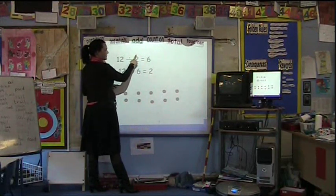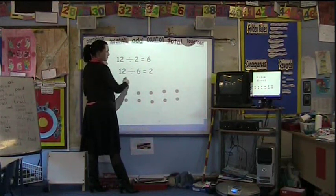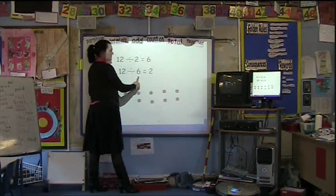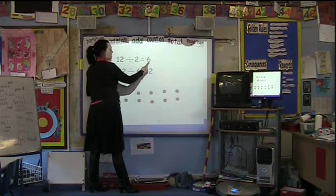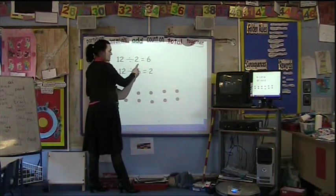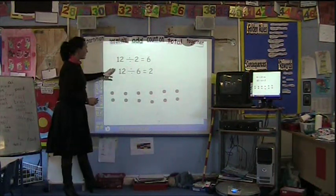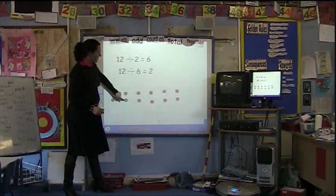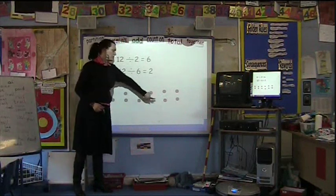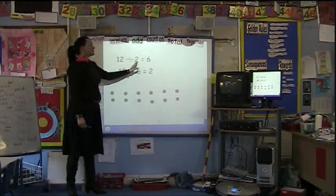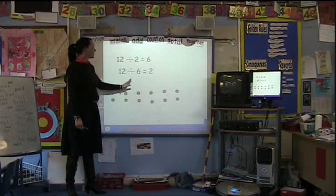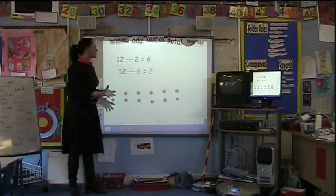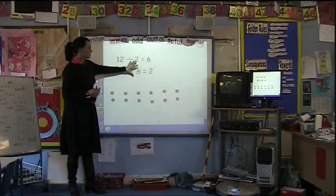Now we can swap the answer with the number that we divided it by, and this time if we divided it into 6 groups, we would have 2. So these two numbers, these two digits, can swap around. So if I've got 12, I would divide it into 6 groups, and I would get 2 in each group. So 12 divided by 2 equals 6, or 12 divided by 6 equals 2. Children can then see the relationship between the two forms.